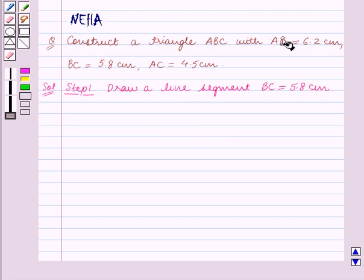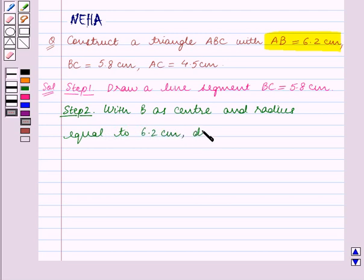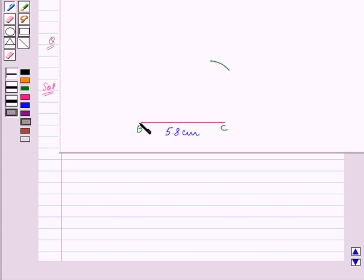Now, we are given that AB is equal to 6.2 cm. So in the second step, we will draw an arc with B as center and radius equal to 6.2 cm. Step 2 is, with B as center and radius equal to 6.2 cm. We have drawn this arc.